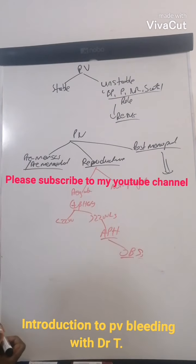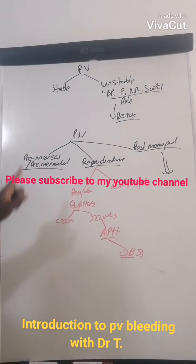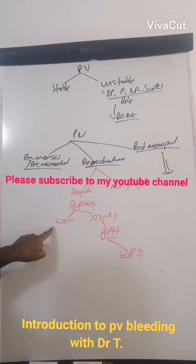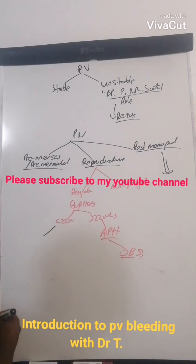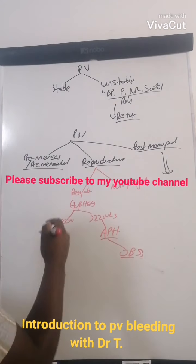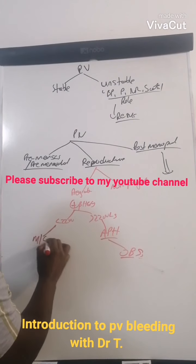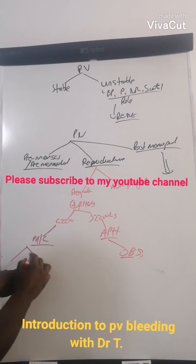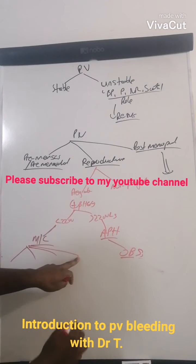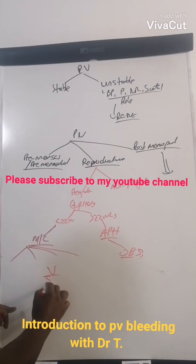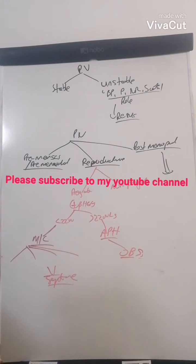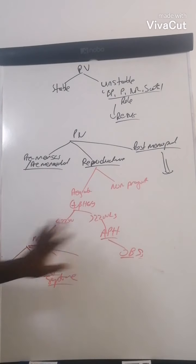So our patient: PV bleeding, reproductive years, HCG positive, less than 22 weeks — you think about miscarriages. We spoke about the different types: threatening, incomplete, complete, and then septic abortion or septic miscarriage. Most of the patients that come in fall into these categories.